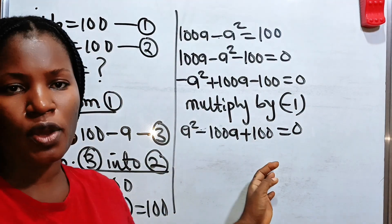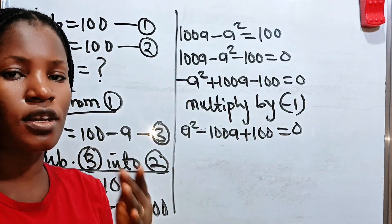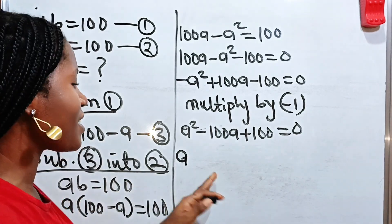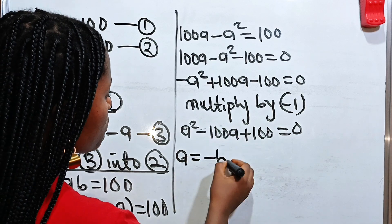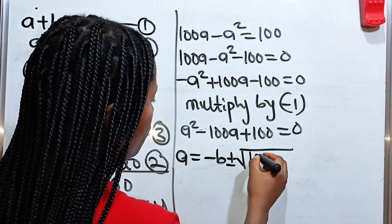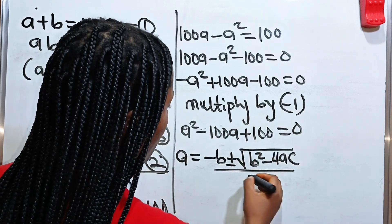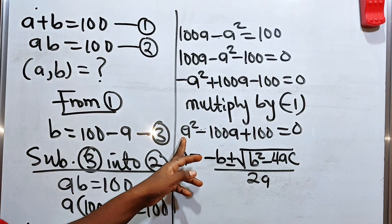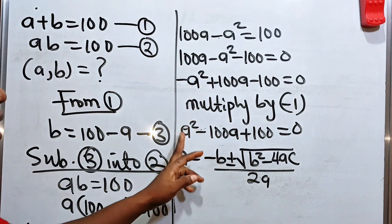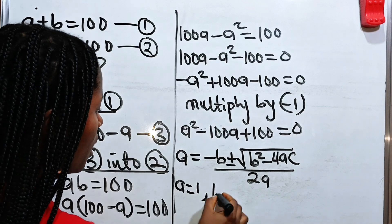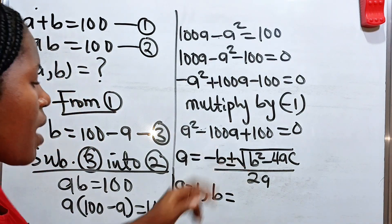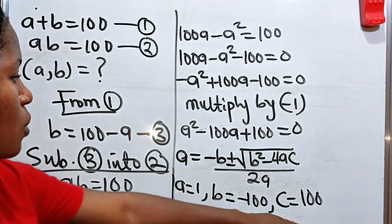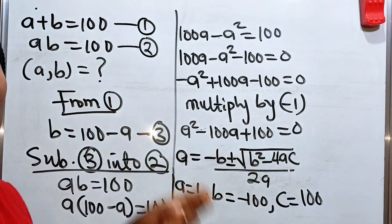So looking at this, we just formed a quadratic equation. Now we are going to solve this using the quadratic formula. Since we are looking for A — we are not going to get confused — remember that A will give us minus B plus or minus square root of B squared minus 4AC, everything divided by 2A. In this case, our A — the coefficient of A squared — is 1. Our B is the coefficient of A, which is minus 100. And our C is our constant, which is 100. So we are going to substitute these values into the formula to get the value of A.